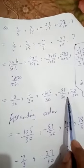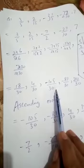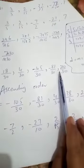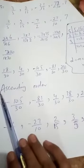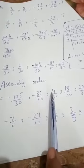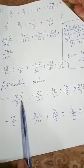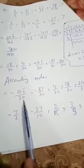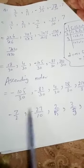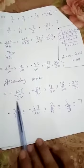Now in ascending order — placing numbers from smallest to largest — we compare the numerators and arrange: −105/30, −81/30, 4/30, 18/30, and 210/30. Writing back the original rational numbers, the ascending order is: −7/2, −27/10, 2/15, 3/5, and 7.